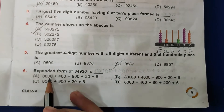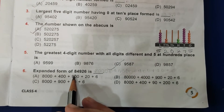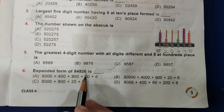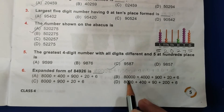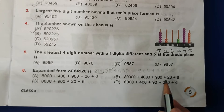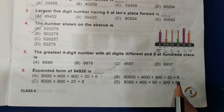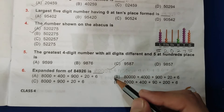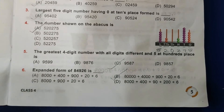Sixth question: expanded form of 84926 is. So it is 80,000 plus 4,000 plus 900 plus 20 plus 6. So B is the correct answer.